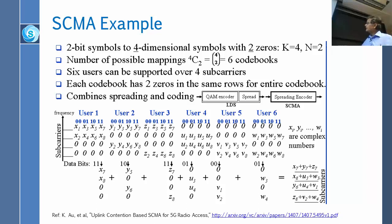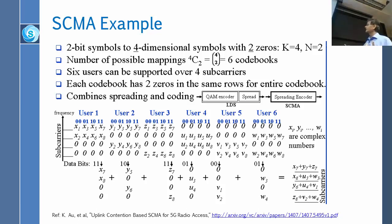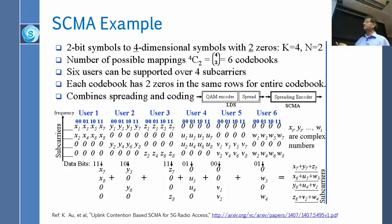Another way to look at this: in LDS, you take incoming bits, form a QAM symbol from two bits as a complex number, and then do the spreading. In SCMA these are not two separate steps — you take the incoming bits and directly produce four subcarrier outputs from them in one combined operation. It is essentially just one box.